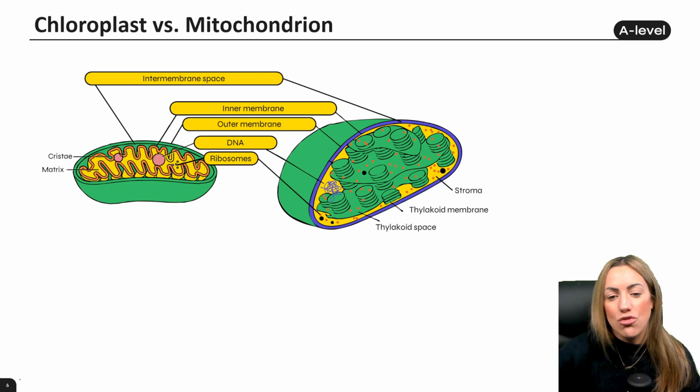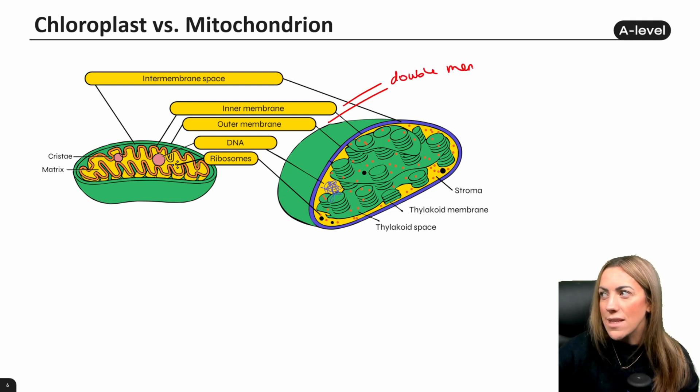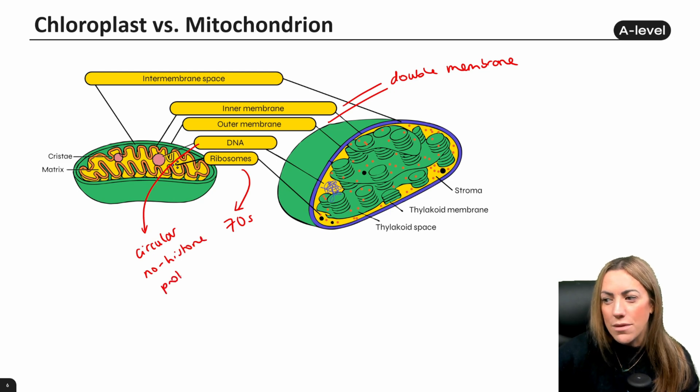Just to finish with, let's compare the structure of a chloroplast in a plant cell with a mitochondrion, which is found in both plant cells and animal cells, because this idea does come up quite a lot. They do both have a double membrane. That's one similarity we can give between these two organelles. They both have an inner and an outer membrane. They both have their own ribosomes, which are 70S ribosomes, and they both have their own DNA which is circular, and there are no histone proteins. So the DNA is not associated with histone proteins.